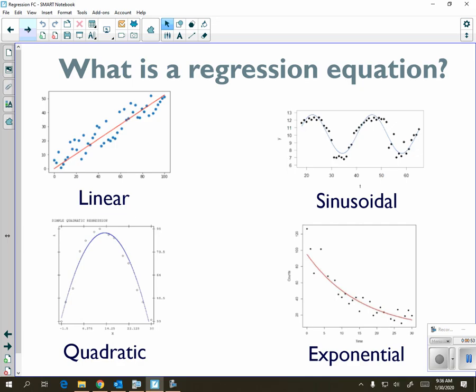And then finally, if your graph models an exponential equation, we're going to use the exponential regression. In this case, on the bottom right, we have exponential decay. Keep in mind that you're going to want to know what type of regression to use based on what your data is or what the problem asks you to do.